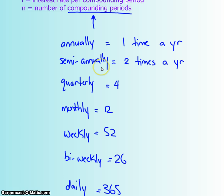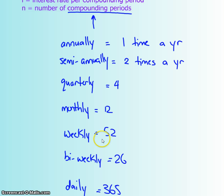If they give you 5% per annum but compounded quarterly, they split the 5% into quarters and give it to you every 3 months. There are also monthly compounding periods, weekly, and bi-weekly — which is 52 divided by 2, so 26 times a year — and daily as well.